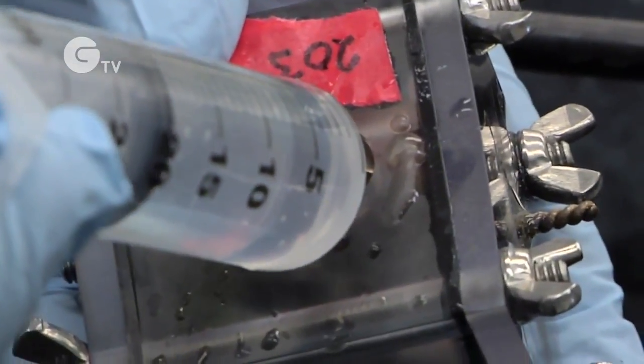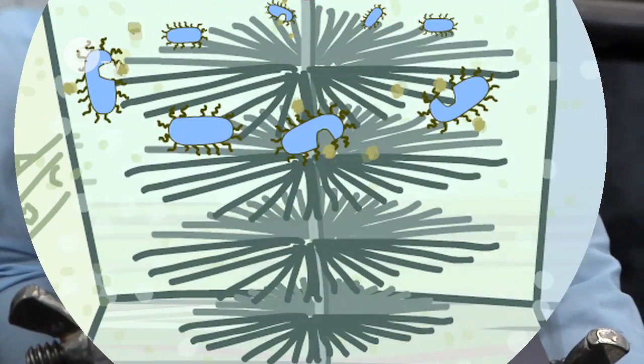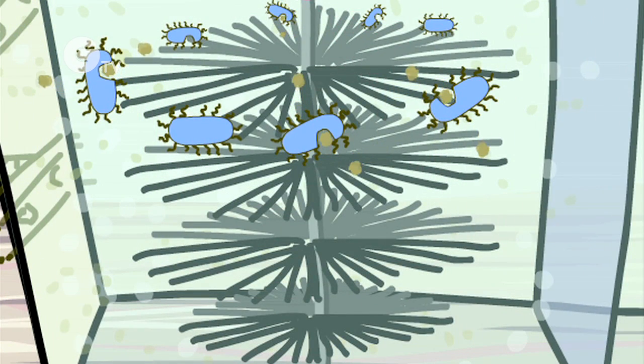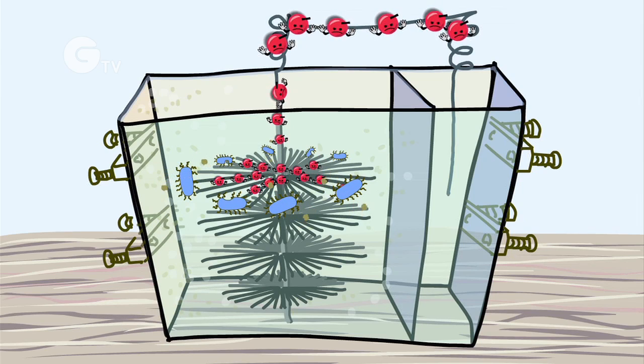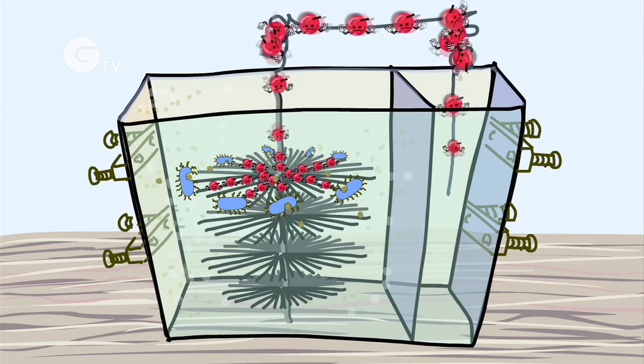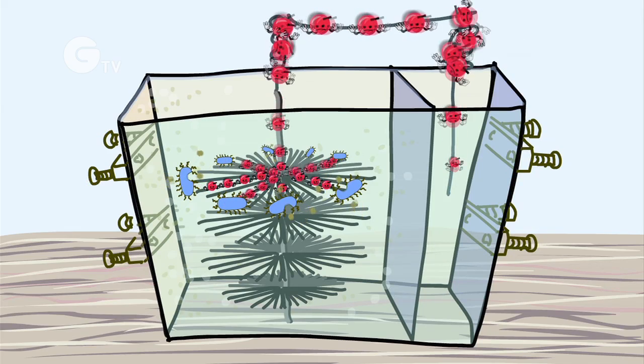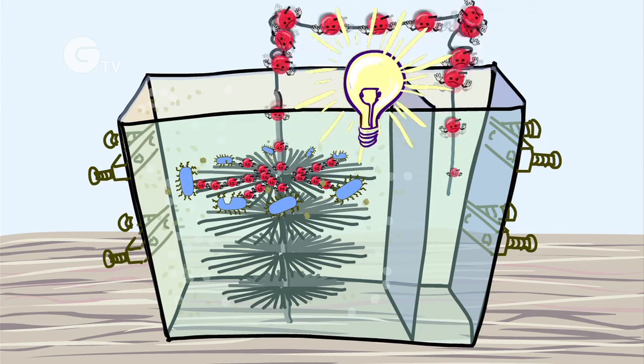We can make all sorts of different kinds of energy. Here's a little cartoon that shows how it works. The bacteria eat the organic waste, releasing electrons as a byproduct. Those collect on carbon bristles in the fuel cell, eventually flowing through a circuit, shown here powering a light bulb.